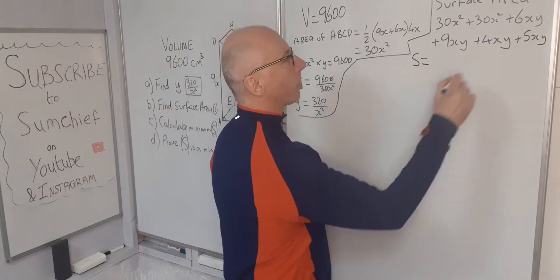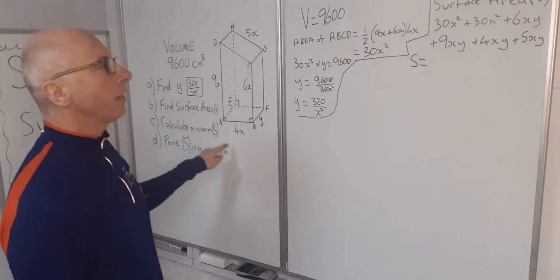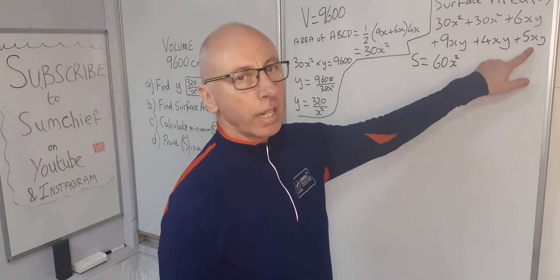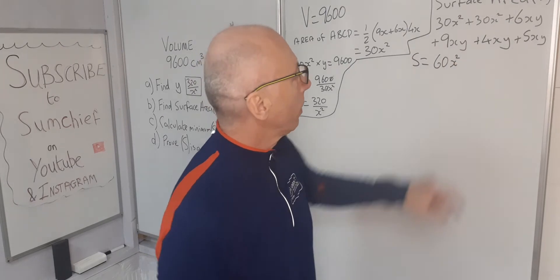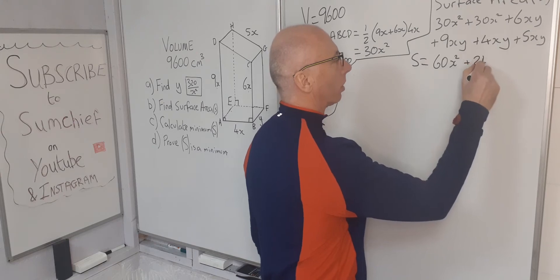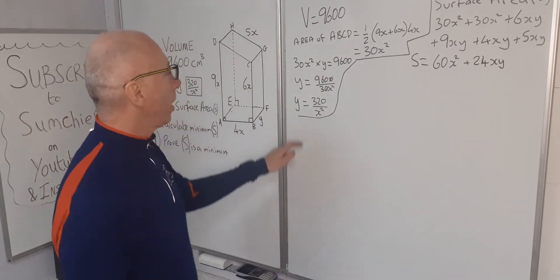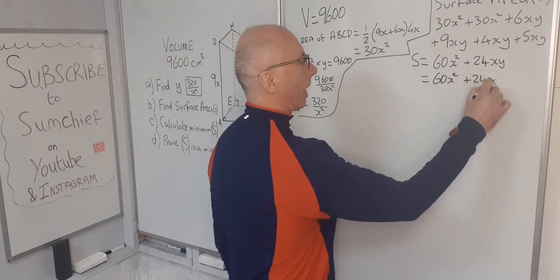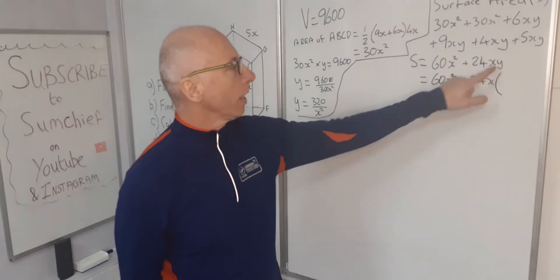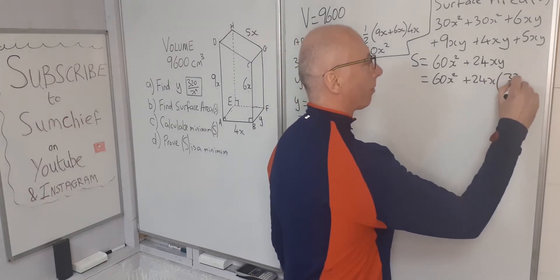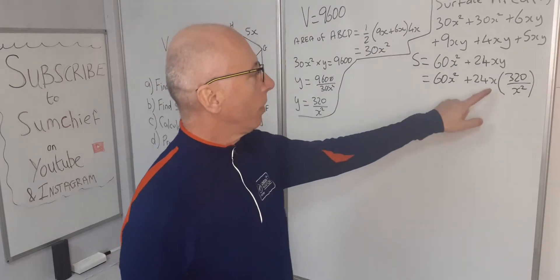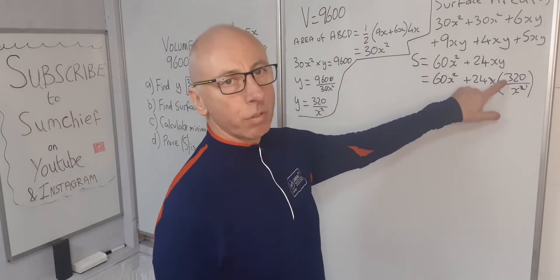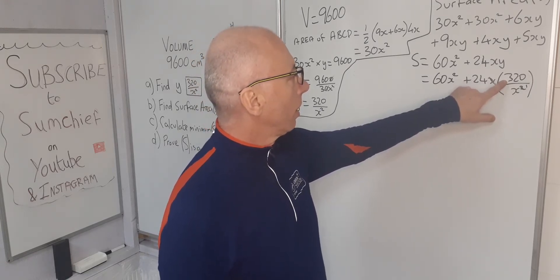Calling the surface area S: 30x squared plus 30x squared gives 60x squared. Adding the xy terms: 6 plus 9 plus 4 plus 5 equals 24, so we have 24xy. Now we know y equals 320 over x squared, so we substitute: S equals 60x squared plus 24x times 320 over x squared. The x in 24x cancels with one x from x squared, leaving 24 times 320 over x.